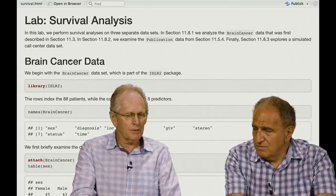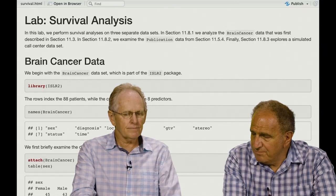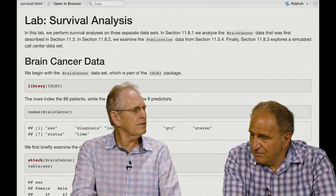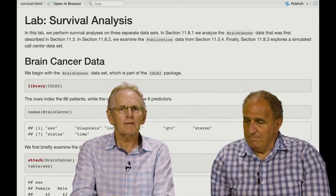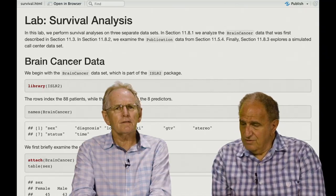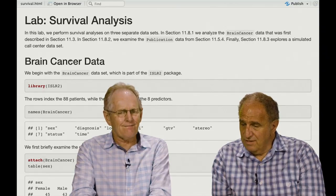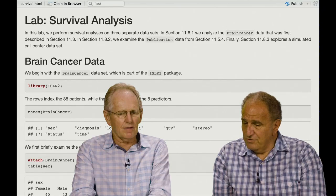Rob, do you want to tell us a little bit about the brain cancer data? Well, it's a data set of 88 patients who suffered from brain cancer, looking at their survival, how long they survived with brain cancer, and looking at the survival as a function of sex, and most importantly, the diagnosis category of brain cancer, as well as other factors.